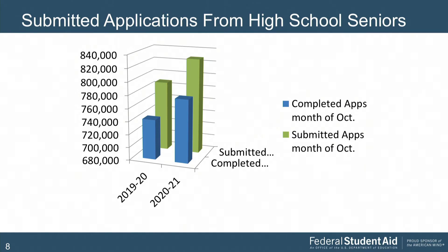Looking at applications submitted from high school seniors, we're comparing completed apps to submitted apps. A submitted app may not have signatures applied — we don't consider an app completed until signatures have been applied. From 19-20 to 2021, we're seeing an increase in both submitted and completed applications. Our overall goal is to see all submitted apps become completed apps so the most people possible eligible for Title IV aid can get what they need for college.